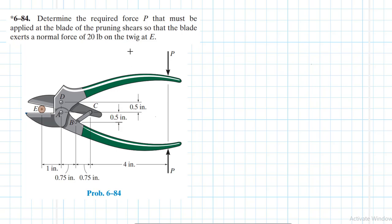Welcome to this screencast. The problem reads: determine the required force that must be applied at the blade of the pruning shears so that the blade exerts a normal force of 20 pounds on the twig at E. This problem comes from Engineering Mechanics Statics, 13th edition by Hibbeler.